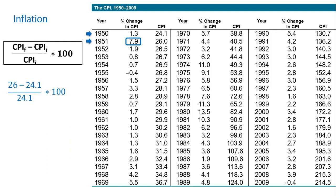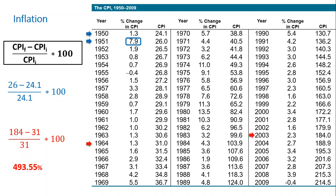The method of calculating inflation is the same, no matter what period we desire. For instance, if we want to calculate the inflation rate between year 1964 and 2003, we do 184 minus 31 divided by 31 times 100. So it's 493.55% — so almost the prices increased by five times.